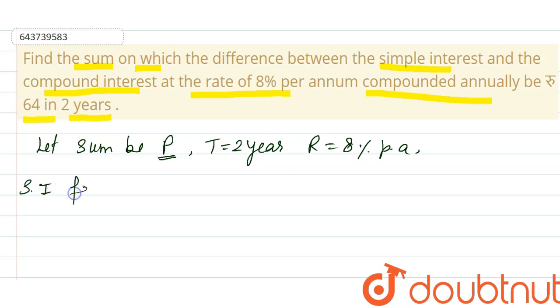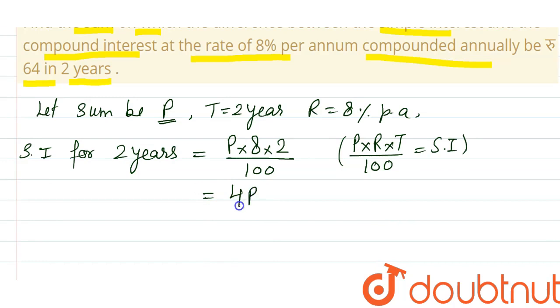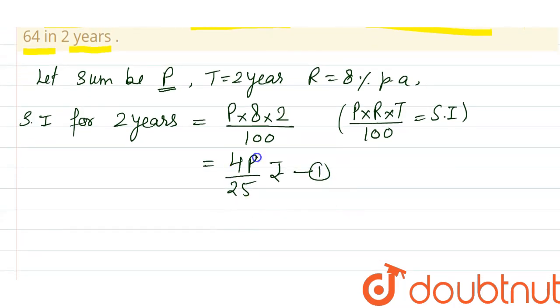both the things. Simple interest for 2 years - that is P×R×T/100. It's the simple formula for simple interest. So by this it will be 4P/25 rupees. This is simple interest on certain sum. And now...